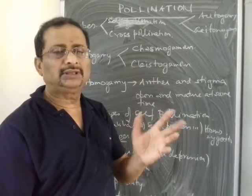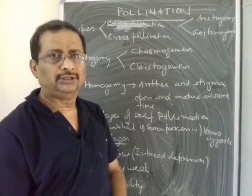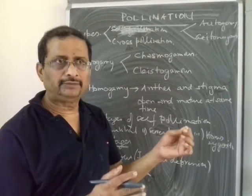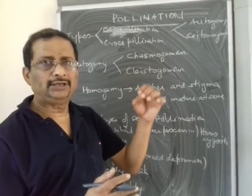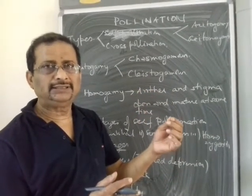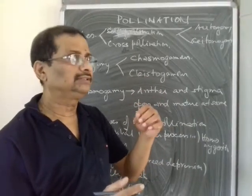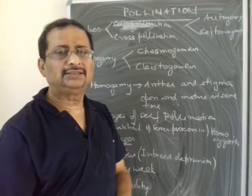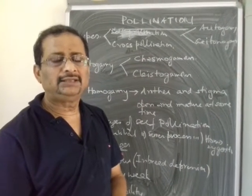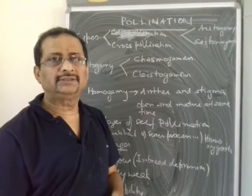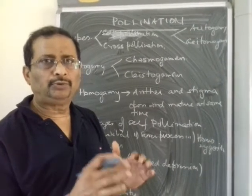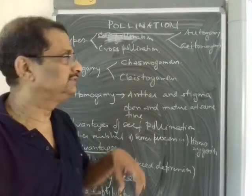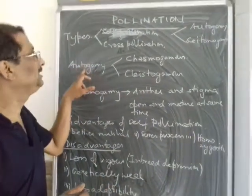Both of these are known as self-pollination. If the pollen grain is transferred from the anther to the stigma of the same flower, it is called autogamy. If it is transferred to another flower on the same plant, it is called geitonogamy. So autogamy and geitonogamy are the two types of self-pollination.